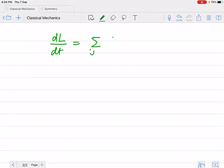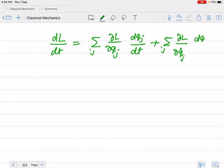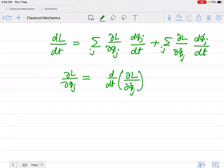Sigma j (del L over del qj)(dqj over dt) plus (del L over del qj dot)(dqj dot over dt). We can put the value of del L over del qj from the Lagrangian equation of motion, so this dL over dt becomes